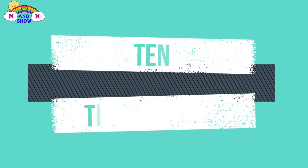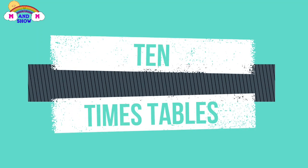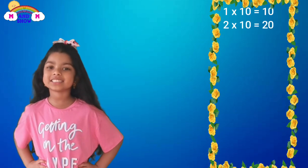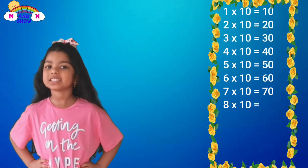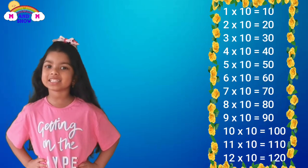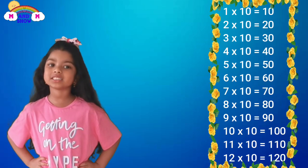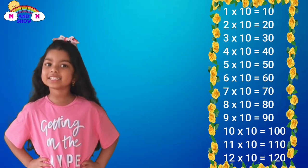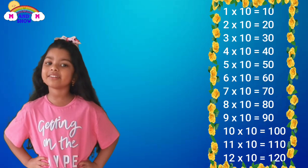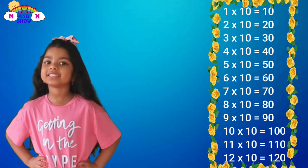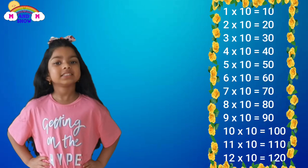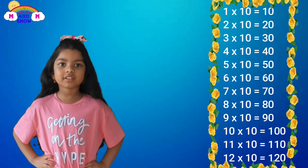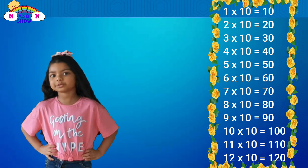Now it's time for the 10 timetables. 1 x 10 is 10, 2 x 10 is 13, 3 x 10 is 13, 4 x 10 is 45, 5 x 10 is 50, 6 x 10 is 60, 7 x 10 is 70, 8 x 10 is 80, 9 x 10 is 90, 10 x 10 is 100, 11 x 10 is 110, 12 x 10 is 120.